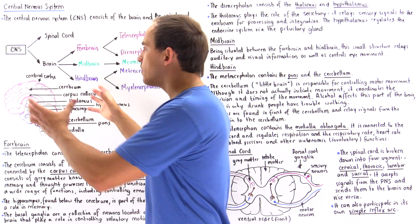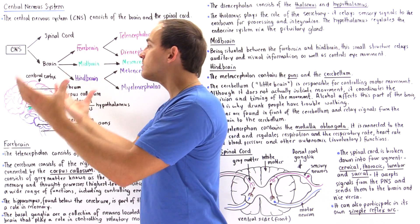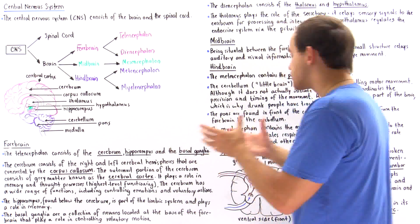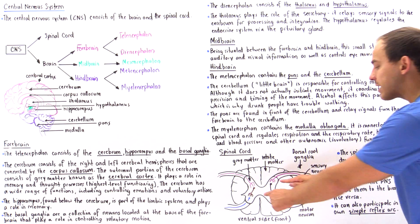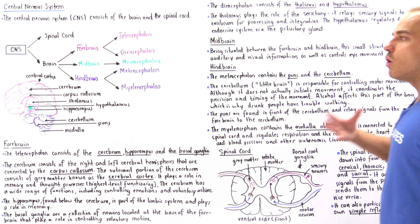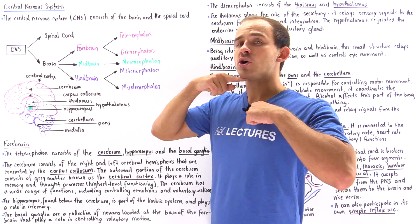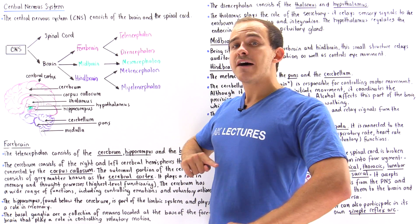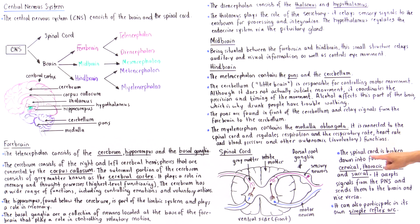A key difference between the brain and the spinal cord is the arrangement of white and gray matter. In the brain, gray matter is on the outside and white matter is on the inside. In the spinal cord, white matter is on the outside and gray matter is on the inside. The spinal cord can be broken down into four regions: the cervical region at the top, then the thoracic, lumbar, and sacral regions.